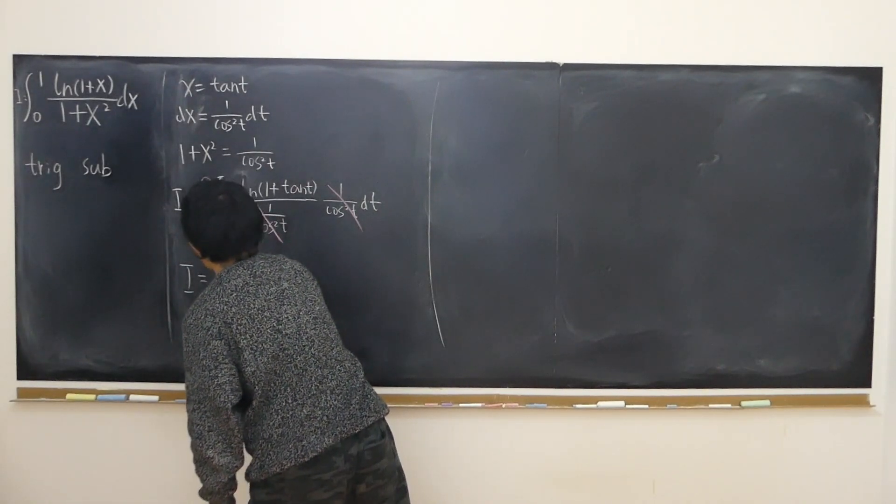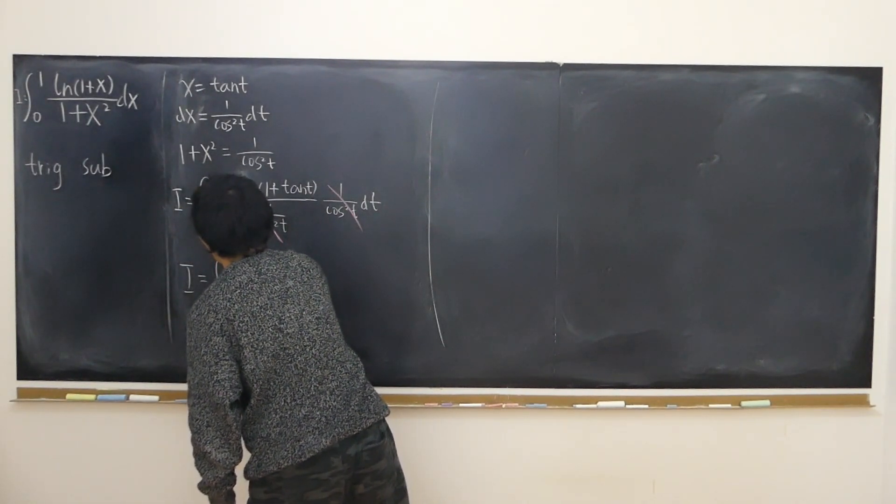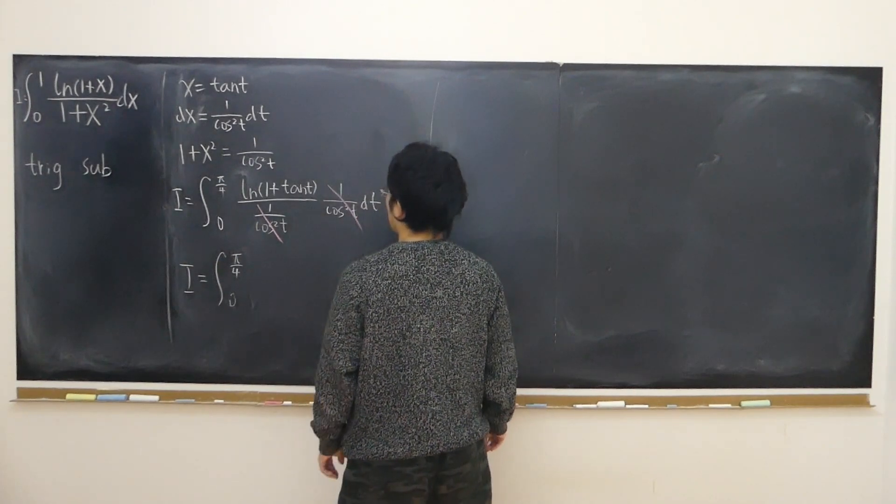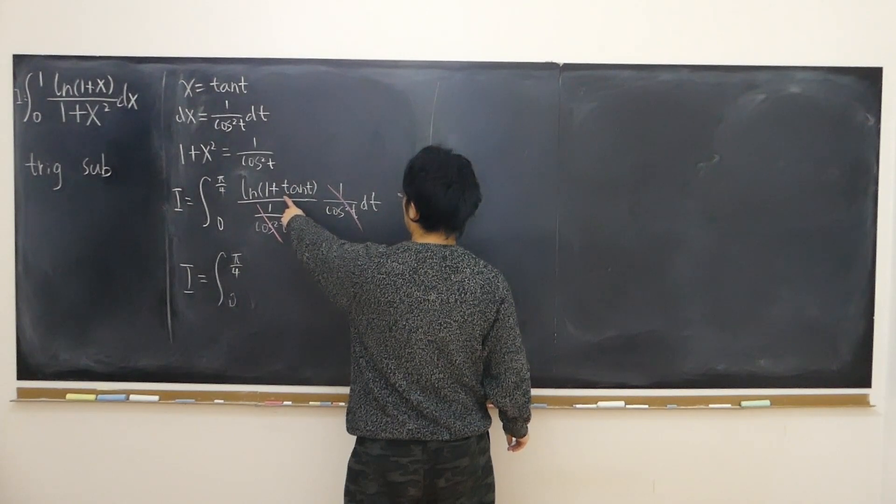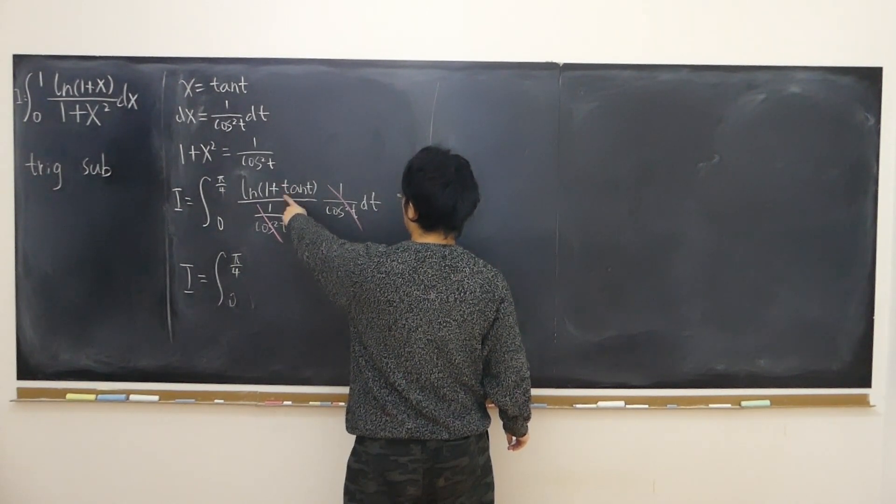And I have i equals 0 to pi over 4 of log of 1 plus tangent. 1 plus tangent is 1 plus sine over cosine. That's cosine plus sine over cosine.